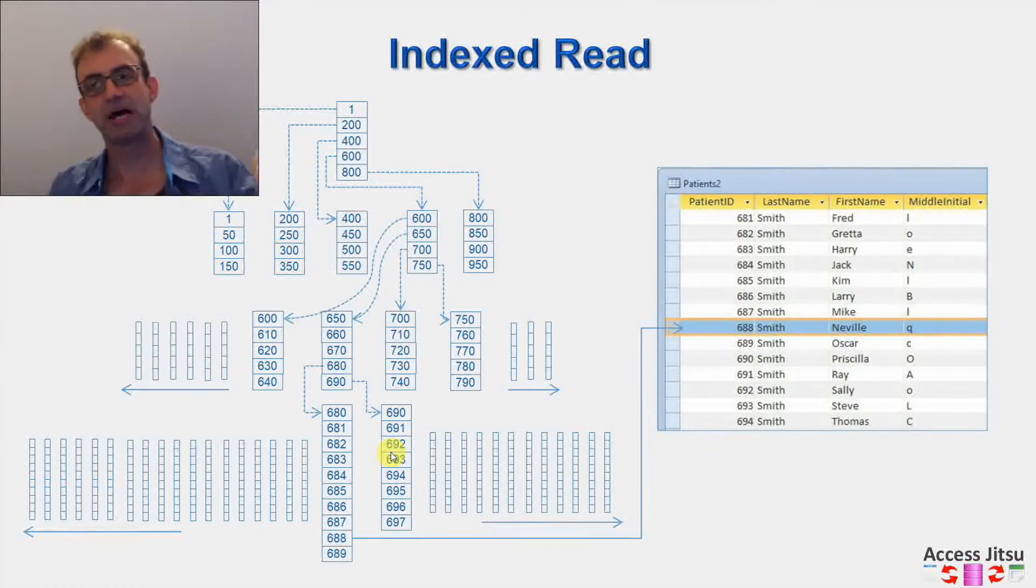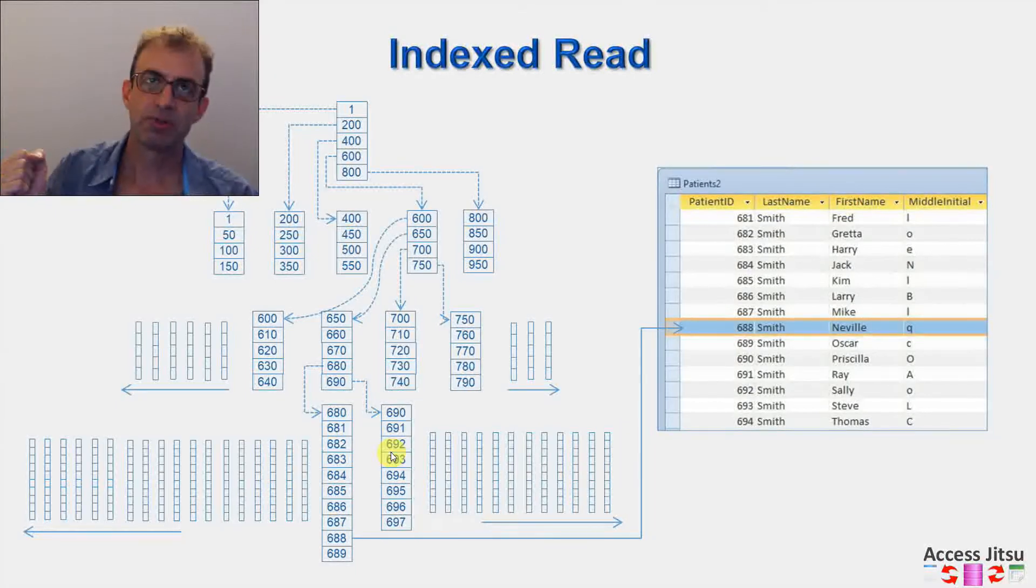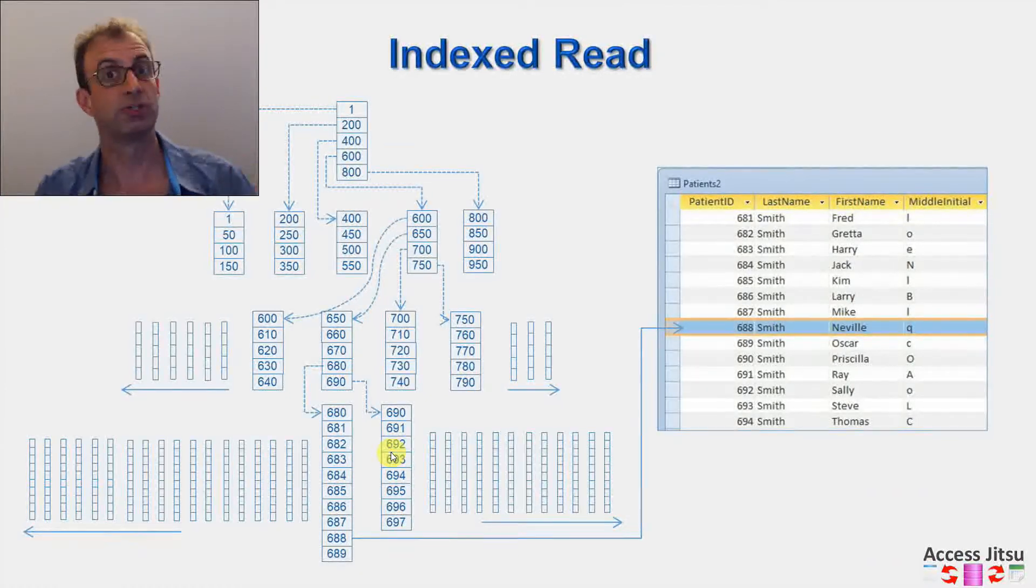So too many indexed columns and tables can slow down the data input and modification side of your applications. There has to be a balancing act that you need to consider. Think about how the table is going to be read, so index the columns that you think you're going to search on, but don't index too many so that the data input side doesn't get too slow.